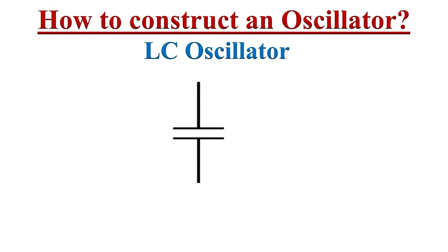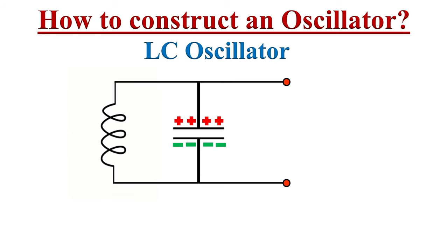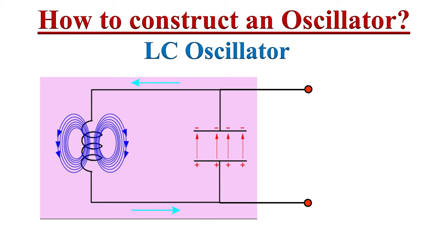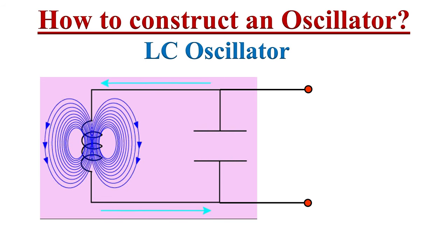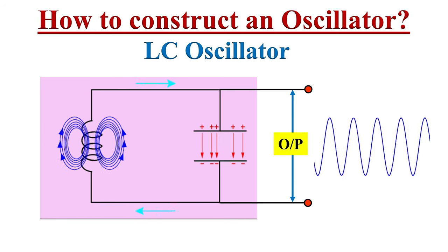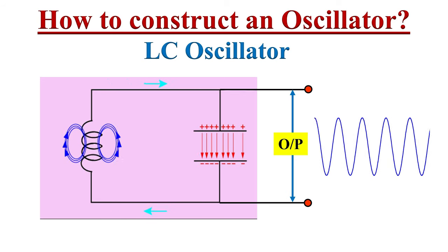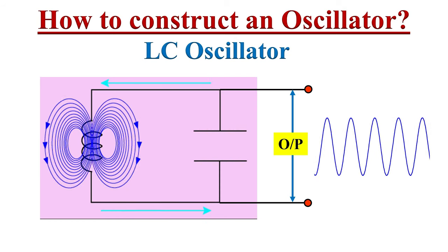To construct an oscillator circuit, take a capacitor and charge it by connecting a DC voltage source. After the capacitor is fully charged, disconnect the DC voltage source. Now, if you connect this charged capacitor across an inductor, you will see a beautiful energy exchange take place between the capacitor and inductor. The sequence of repeated charge and discharge happens between the capacitor and inductor, resulting in the alternating motion of electrons. This LC circuit can produce electrical oscillations of a frequency determined by the values of L and C.